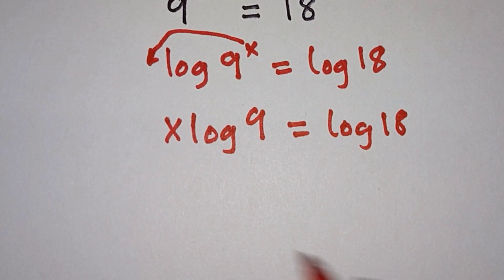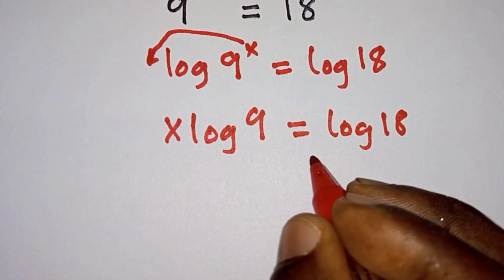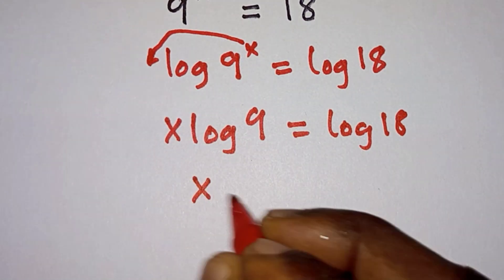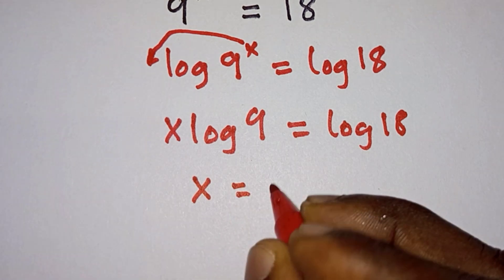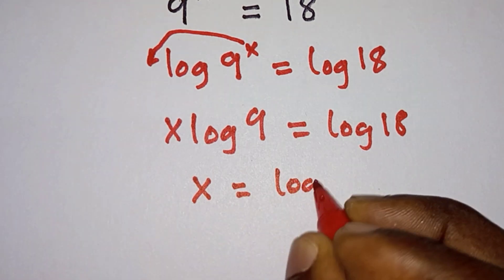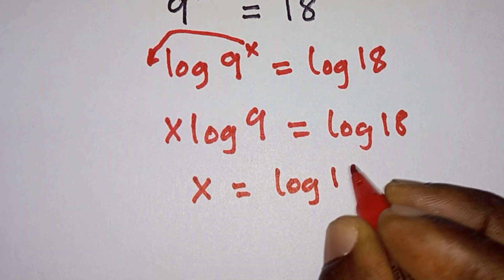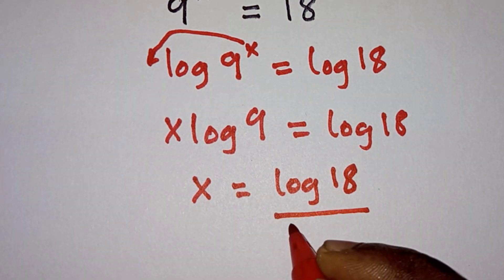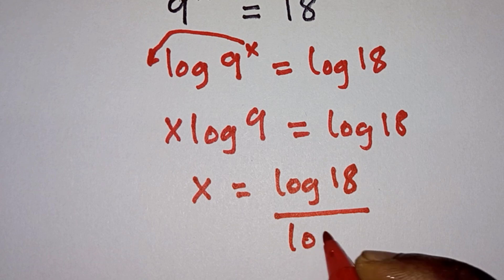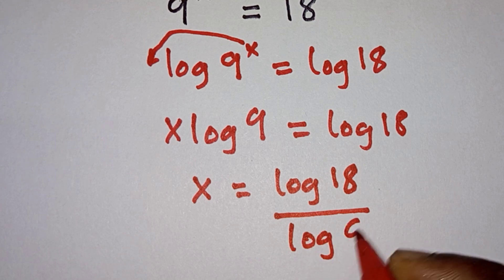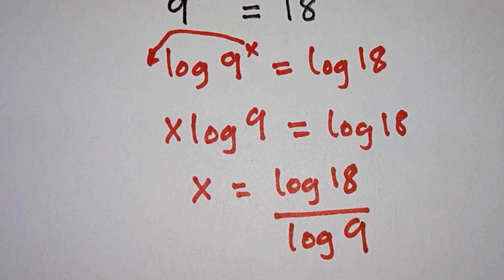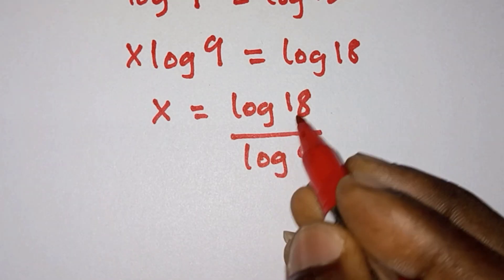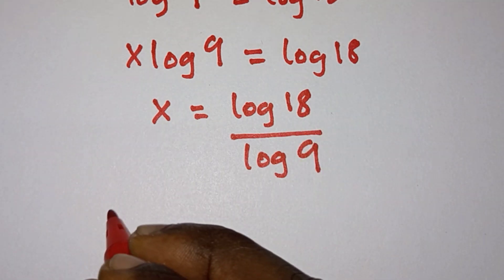Now let's divide each side of the equation by log 9, so that we will get x is equal to log 18 divided by log 9. And we know that 18 is the same as 9 times 2.